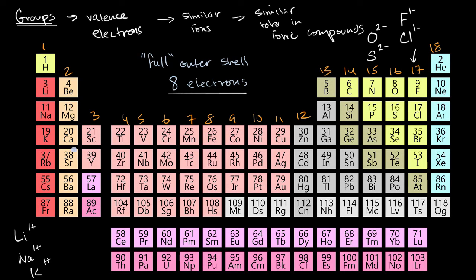What about the group two elements, also known as the alkaline earth metals? It's easier for them to lose two electrons than to gain six to have a full outer shell. So you'll typically see beryllium with a positive two charge, magnesium with a positive two charge, and calcium with a positive two charge.